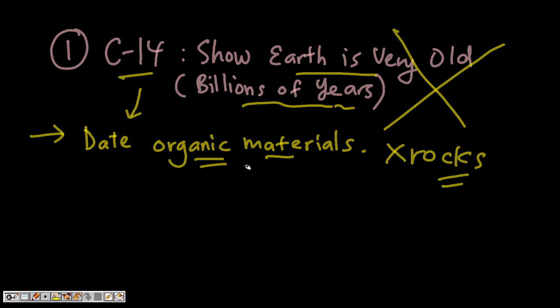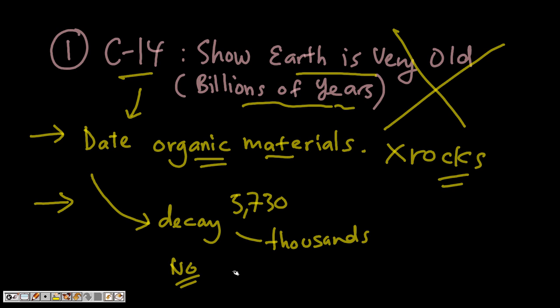Secondly, since carbon-14 decays at such a rapid rate of only about 5,730 years in its half-life, then the dates that it gives is only in the thousands and not in the millions. Because by the time millions of years have passed, supposedly there will be no traces of carbon-14 left. So the rapid decay of carbon-14 can only point to thousands of years, not millions.